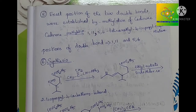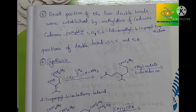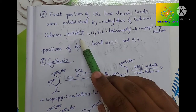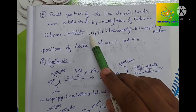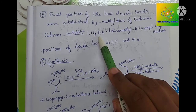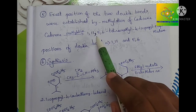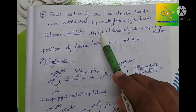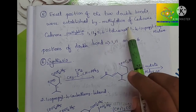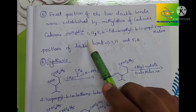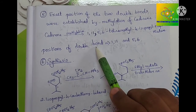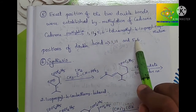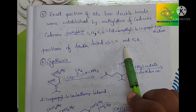Now it is important to find the exact positions of the two double bonds, and this is established by the methylation reaction with cadinine. Cadinine on methylation gives 1,11 and 5,6 positions methylated — that is 1,11 and 5,6 tetramethyl-4-isopropyl naphthalene. So the positions of the double bonds are 1,11 and 5,6.